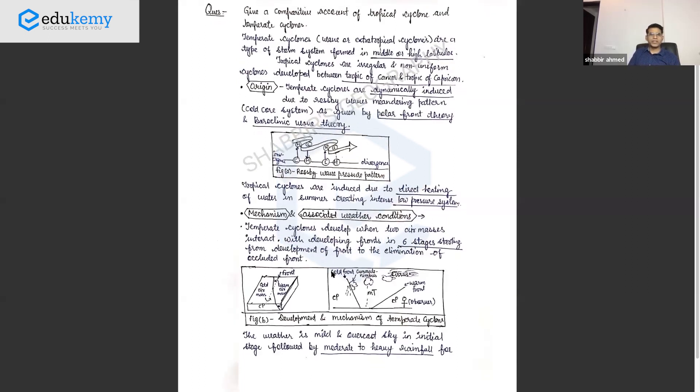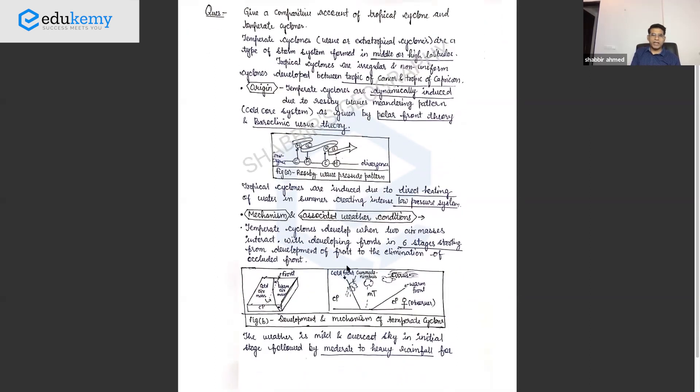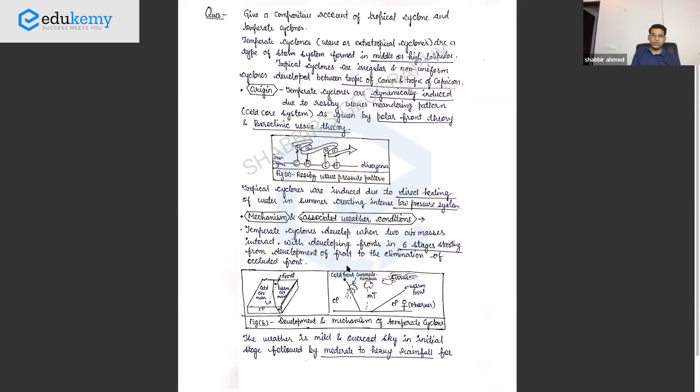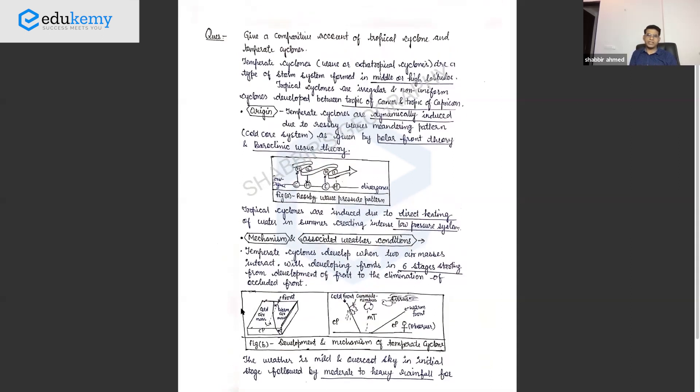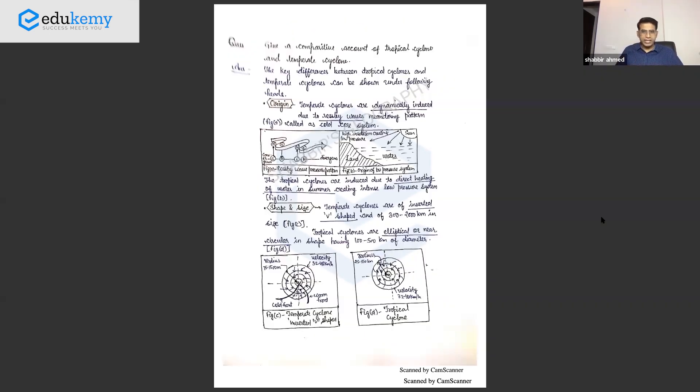The question was 'give a comparative account of tropical and temperate cyclones.' This is the first page. Remember, the writer also leaves margins - left margin, right margin, top margin - so the effective space you're using in your answers. Look at the same question, same person writes, but see this is different. From the word go, the key differences between tropical and temperate cyclones can be shown under the following heads.